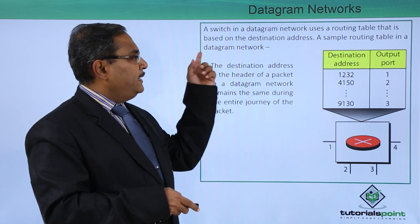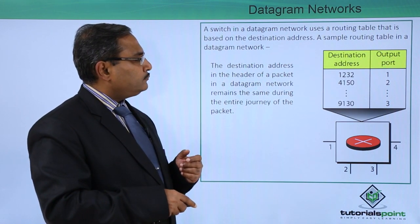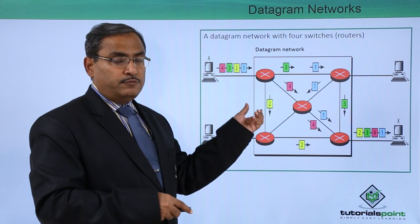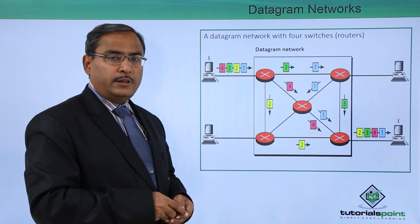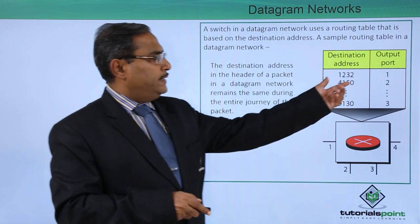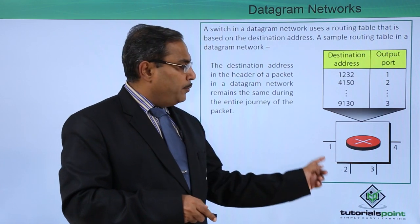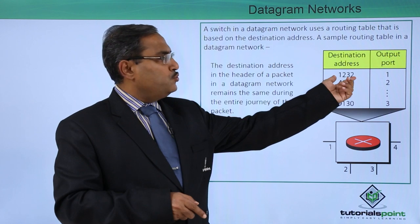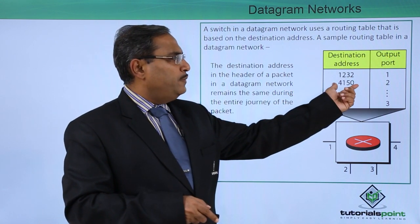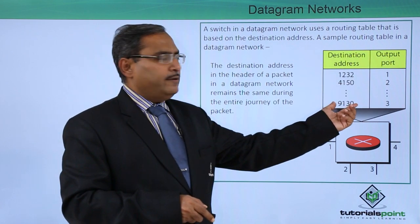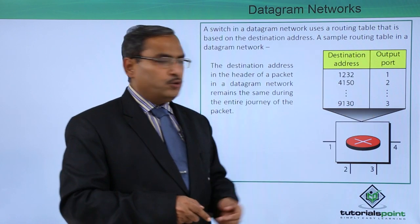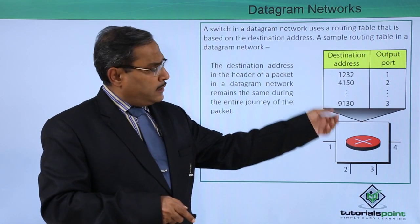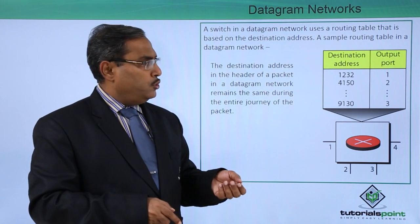A switch in a datagram network uses a routing table based on the destination address. Here is a sample routing table. The switch has four output ports numbered 1, 2, 3, and 4. Whenever the destination address is 1232, the output port is 1; when it is 4150, the output port is 2; when it is 31309130, the output port is 3. Multiple destination addresses can map to the same output port. This routing table helps the switch make its routing decisions.